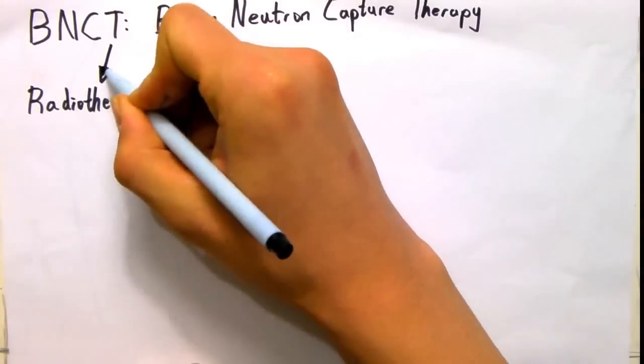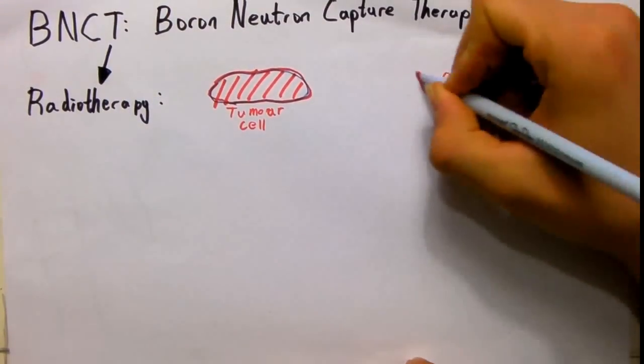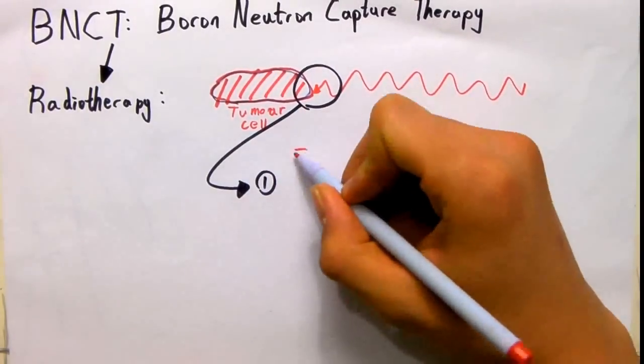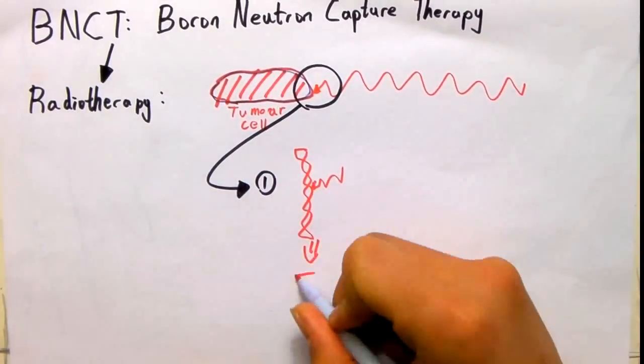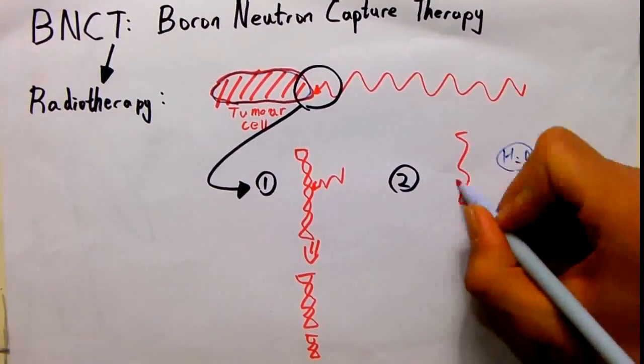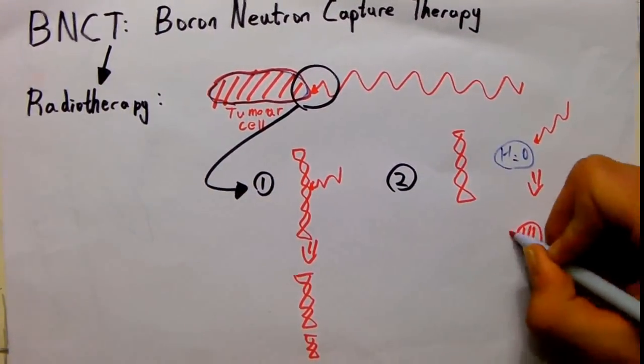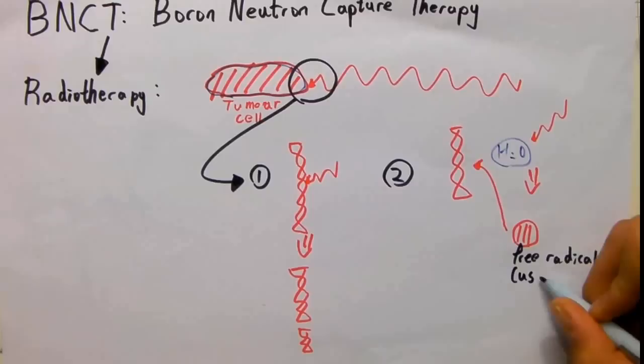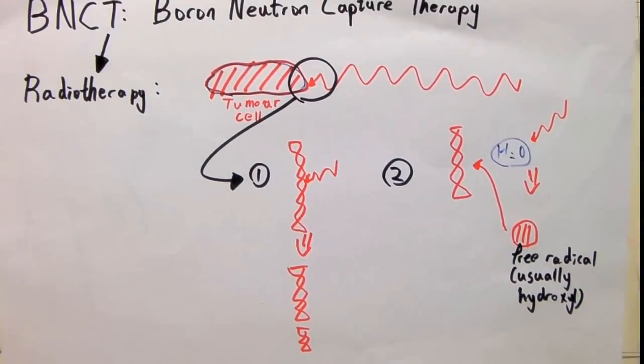Boron neutron capture therapy is an experimental type of radiotherapy. Radiotherapy involves killing cells using ionizing radiation, mainly through ionization of cell DNA or ionization of water in the cell near the DNA, forming free radicals which then damage the DNA. With the DNA damaged, the cell dies or loses the ability to reproduce.